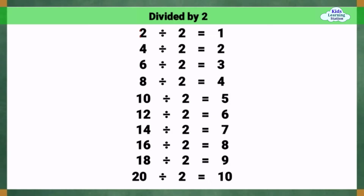Divided by 2. 2 divided by 2 equals 1. 4 divided by 2 equals 2. 6 divided by 2 equals 3. 8 divided by 2 equals 4. 10 divided by 2 equals 5. 12 divided by 2 equals 6. 14 divided by 2 equals 7. 16 divided by 2 equals 8. 18 divided by 2 equals 9. 20 divided by 2 equals 10.